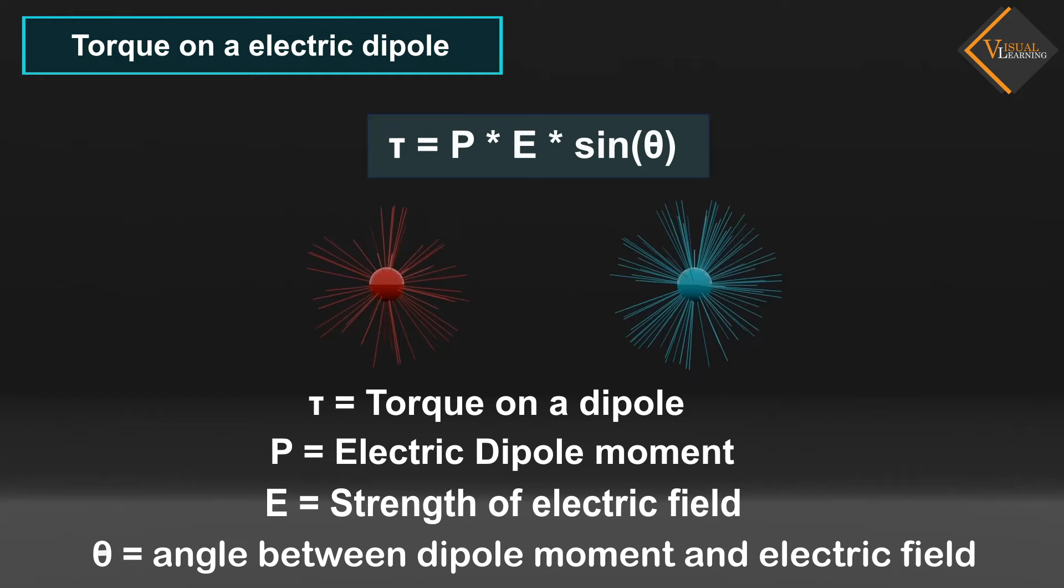Torque is a vector quantity, meaning it has both magnitude and direction. Let us understand in detail.